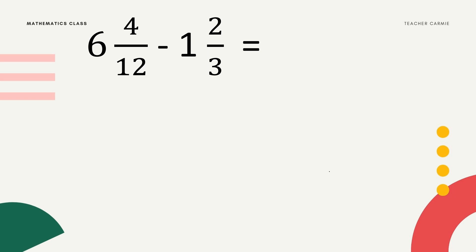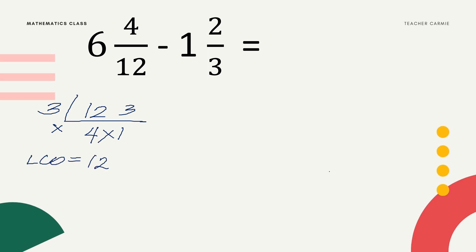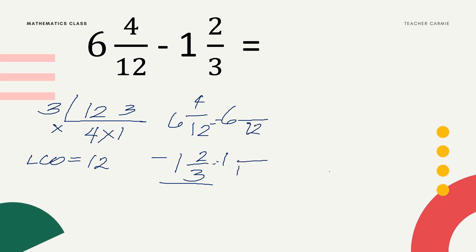Next example: 6 and 4/12 minus 1 and 2/3. Find the LCD of 12 and 3. Divisible by 3: 12 divided by 3 is 4, and 3 divided by 3 is 1. Stop since we cannot divide 4 and 1 any further. Multiply the outside numbers: 3 times 4 times 1 equals 12. The given 6 and 4/12 minus 1 and 2/3 — we change 2/3 using LCD 12. Just copy the 4. Then 12 divided by 3 is 4, times 2 equals 8.